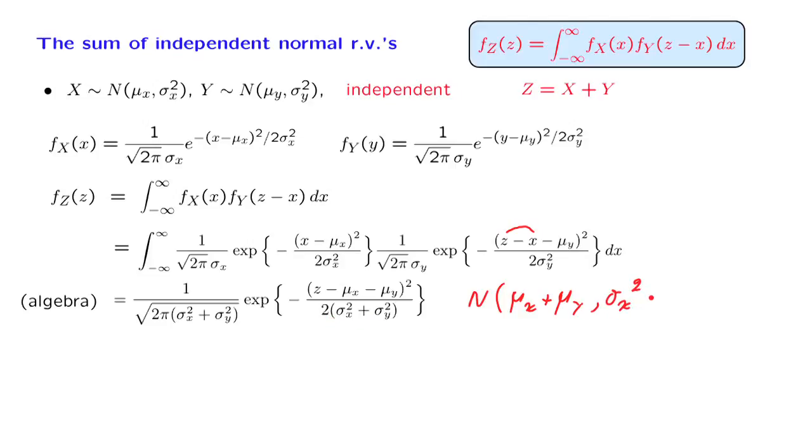So the sum of these two normal random variables, these two independent normal random variables, is also normal. The fact that this is the mean and this is the variance of the sum, of course, is not a surprise. What is important in this result that we have here is that the sum is actually normal.